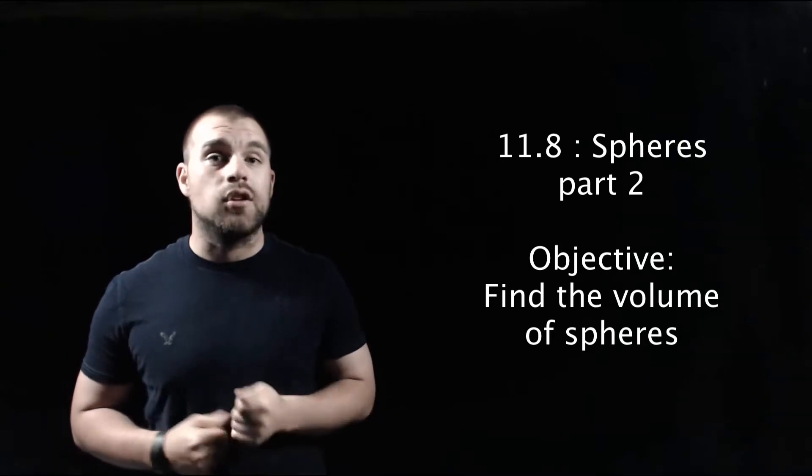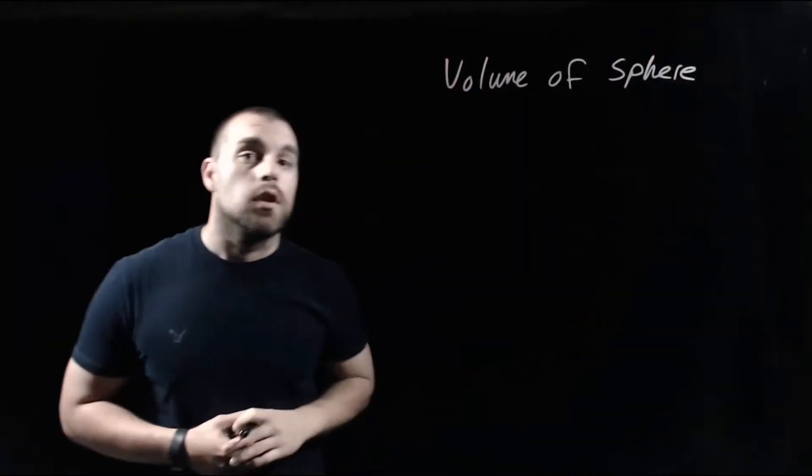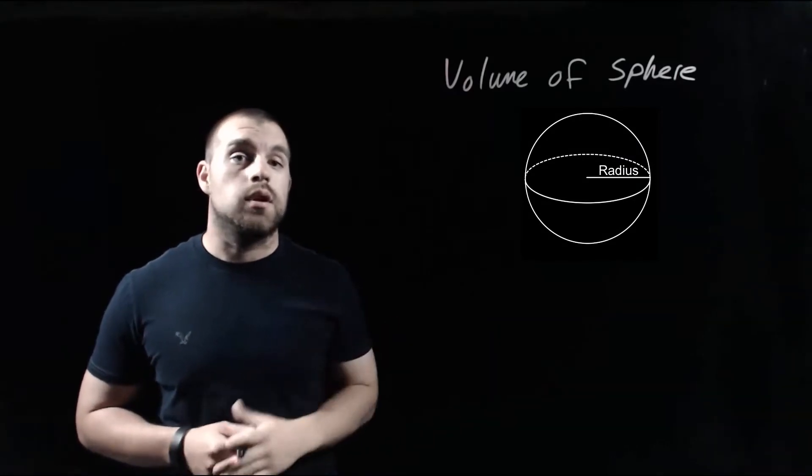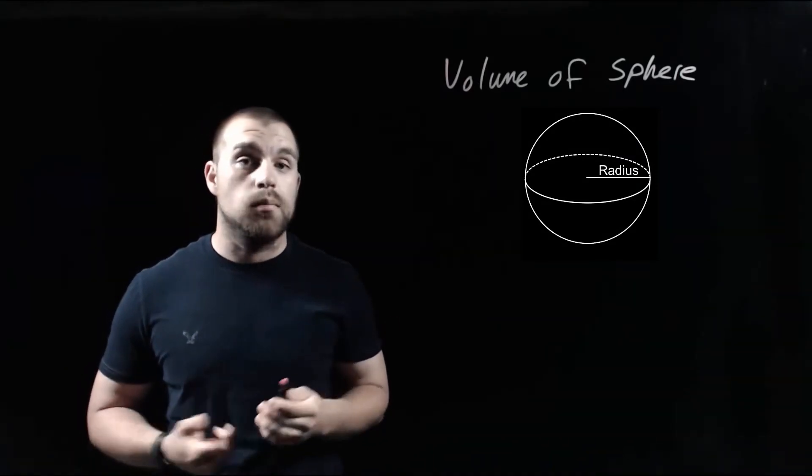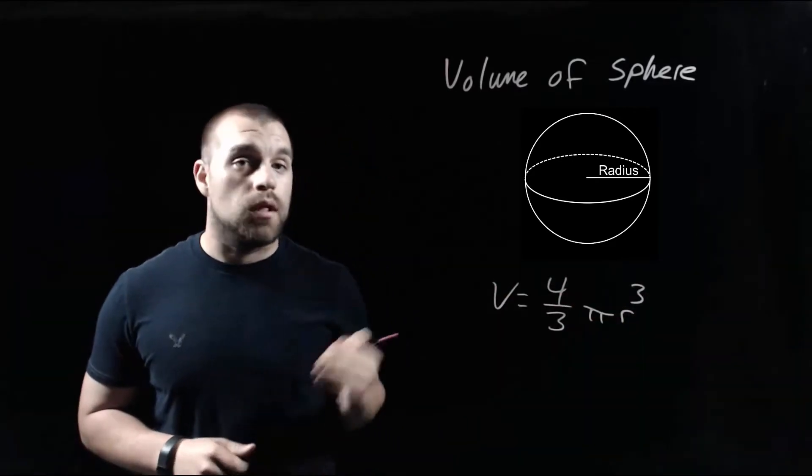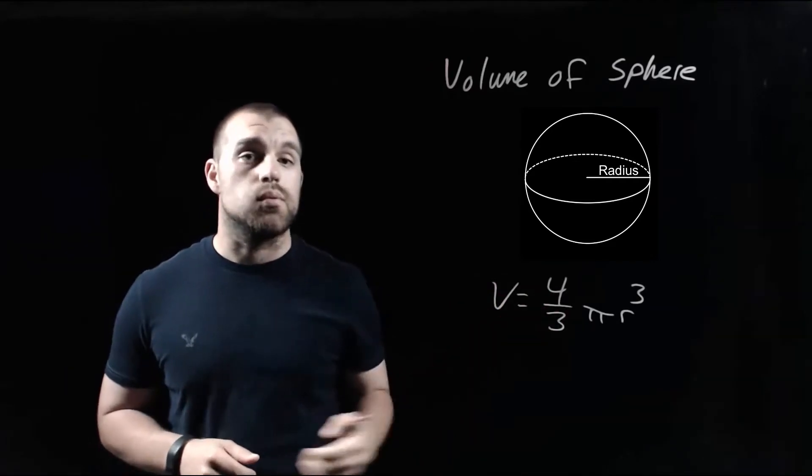So as we're looking at finding the volume of a sphere, just like we use the radius in order to find the surface area of a sphere, we're also going to use the radius in order to find the volume of a sphere. And the volume formula for a sphere says that we do 4 thirds times pi times the radius cubed.